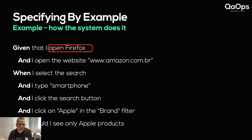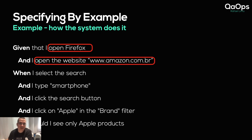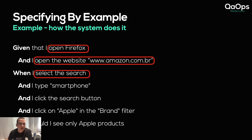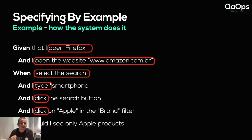Let's take a deeper look. Do you really need to specify which browser to open, unless it's a browser-specific scenario? Do you need to specify the Amazon website, if you're working on Amazon? You don't need to tell it's the Amazon website unless you're a consultant testing multiple e-commerce sites in Brazil. When you select the search — do you really need to say you selected it? If they change how the search works, you'd have to change your scenario. And when you type 'smartphone' — maybe you can search by clicking or another way.